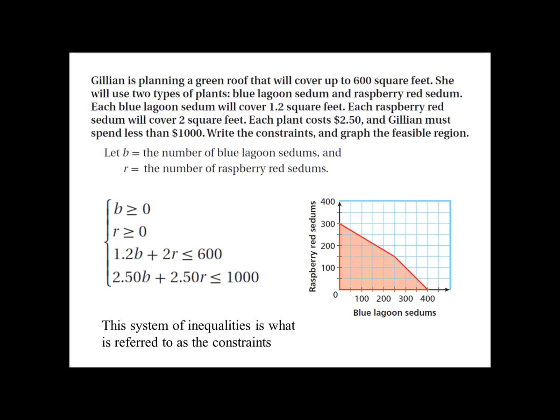A lot of times people forget the two most basic constraint equations. We can't have negative numbers of plants, so B is greater than or equal to zero, and R is greater than or equal to zero — these are two very obvious and very often overlooked constraint equations. The rest of the constraints come from either how much area the plant covers or how much the plant costs. Each blue lagoon covers 1.2 square feet and each red sedum covers 2 square feet. When we add it all up it has to be less than or equal to 600, because she will cover up to 600 square feet.